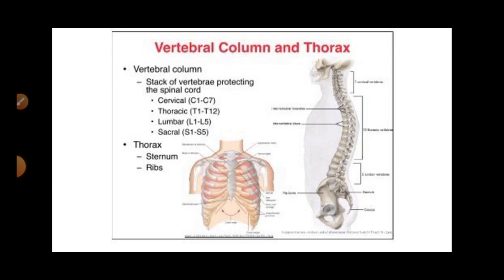Now we want to learn about the thoracic cage and the vertebral column. In the last lecture we saw that the axial skeleton has 80 bones and skull bones are 29 in number. That 29 is divided into: facial bone is 14, cranial bone is 8, and associated bones — six ear ossicles and one hyoid bone. So all that discussion is complete.